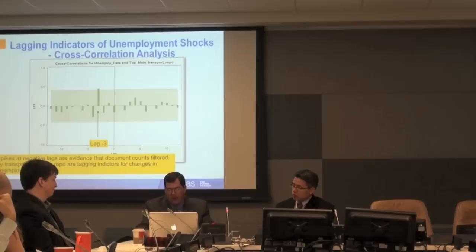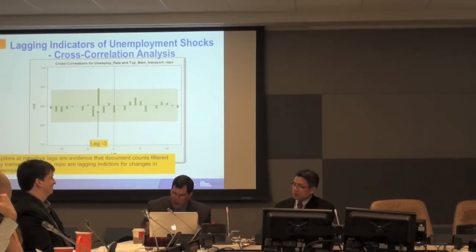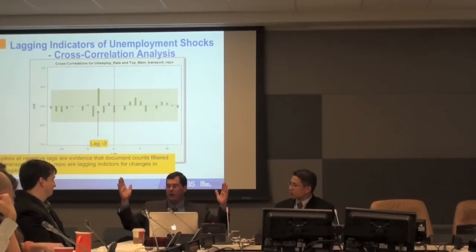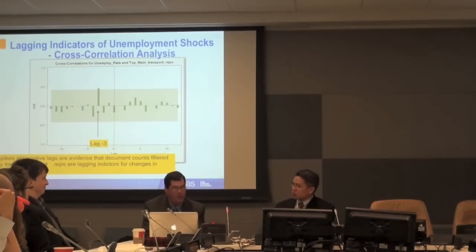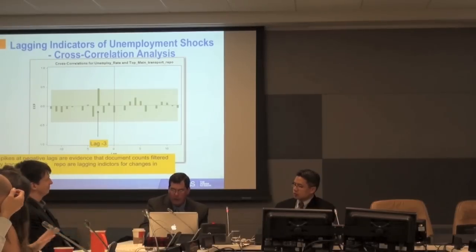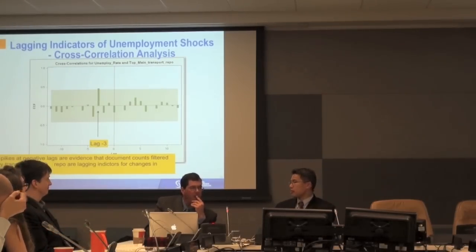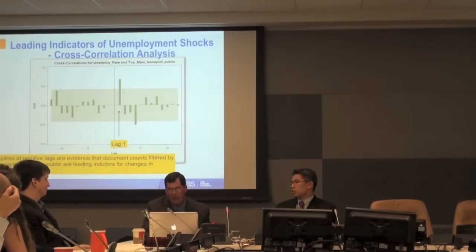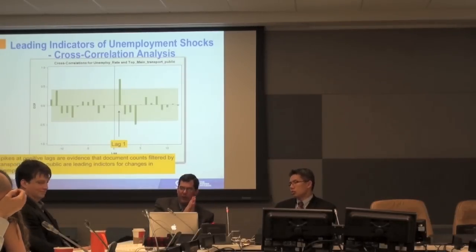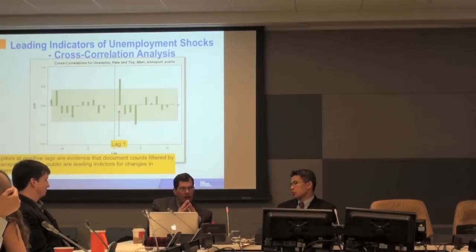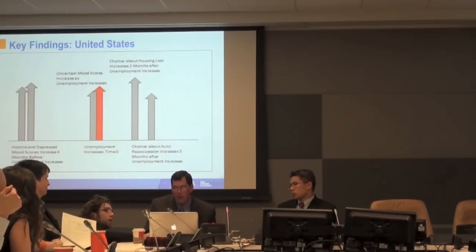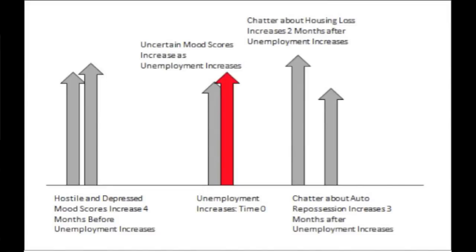Looking at the actual statistical output, you can clearly see this relationship. Over the 24-month period, you'll see a spike in unemployment and then immediately following — three months later — a spike in social media chatter around transportation repossession. We're also looking for leading indicators: items that give us an indication we're about to see a spike in unemployment. This particular finding is with respect to increased chatter around public transportation usage within the U.S. — a very significant relationship. As we see a heavy spike in social listening chatter around public transportation, one month following we see an increase in unemployment spikes.